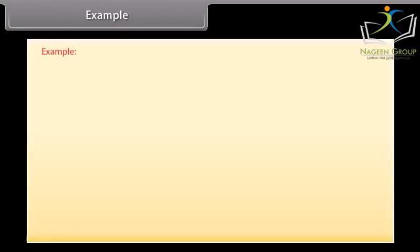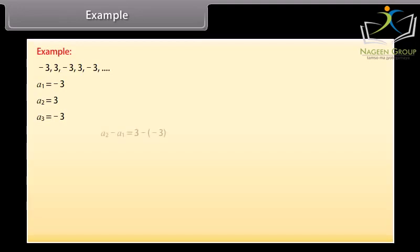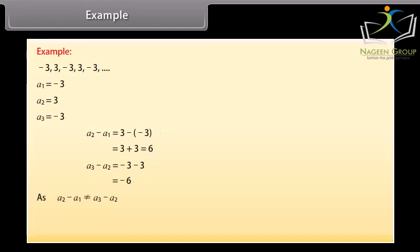Let us now solve some examples. Observe this sequence. We will find out whether these numbers form an AP or not. Here A1 is minus 3, A2 is 3, A3 is minus 3, and so on. Now A2 minus A1 is equal to 3 minus (minus 3), which equals 6. Also, A3 minus A2 is equal to minus 3 minus 3, which is minus 6. As A2 minus A1 is not equal to A3 minus A2, the given sequence is not an arithmetic progression.